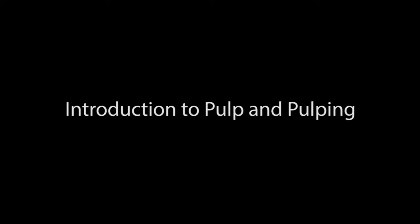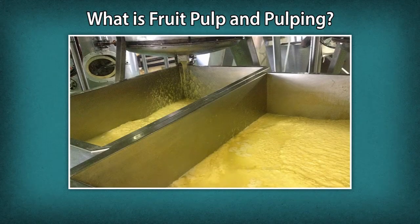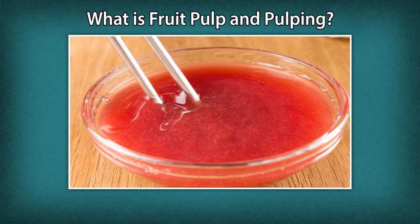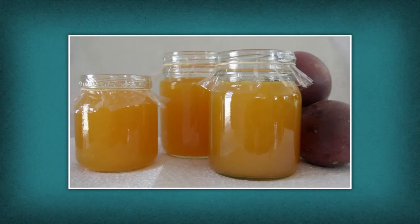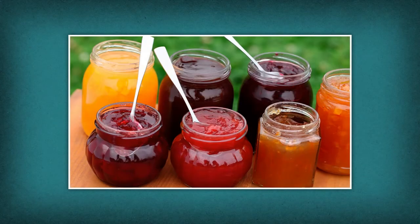Introduction to pulp and pulping. Fruit pulp is a soft, moist mass extracted from fruit after removal of skin, seeds, pith, and fibrous particles. The process to create pulp is called pulping, performed under a controlled environment where temperature, pressure, and heat are monitored. The resulting product is a shapeless mass, acidic in taste, and is further processed for making a range of products like concentrates, juices, nectars, squashes, cordials, syrups, crush, jams, and jellies.